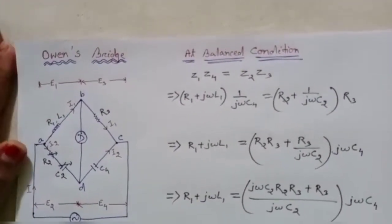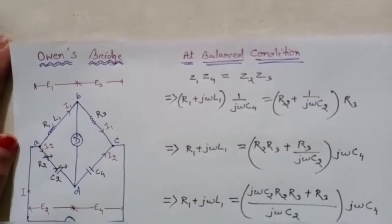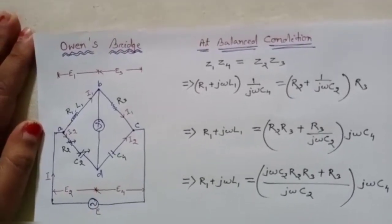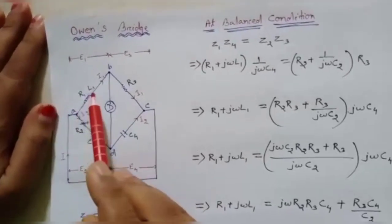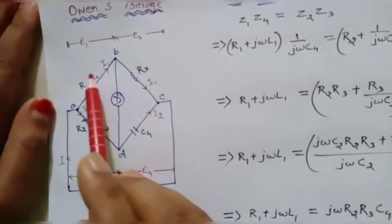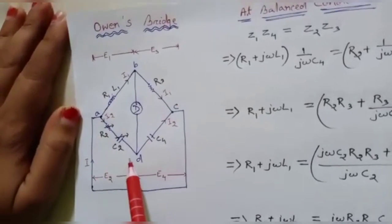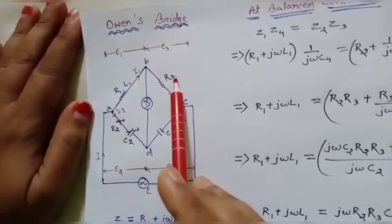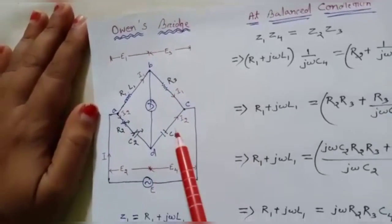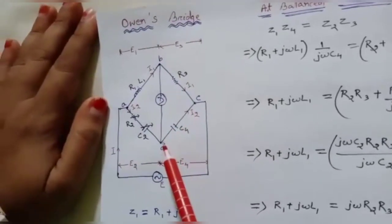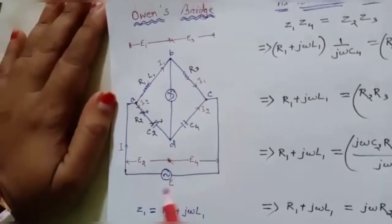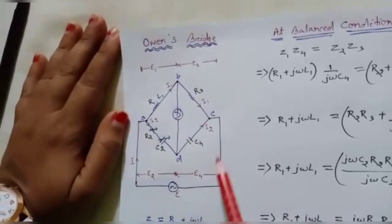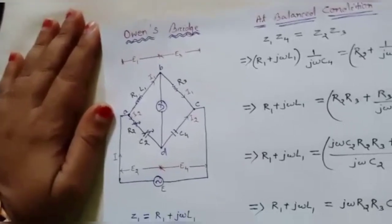Hello everyone. In this lesson we will study about Wein's Bridge. This bridge is also used for measurement of unknown inductance. Here is the bridge circuit — branch 1 has the unknown R1 and L1 that we need to find out. Branch 2 has a variable resistor and variable capacitor. Branch 3 is a simple resistive branch, and branch 4 is a purely capacitive branch. The detector is connected between points B and D, and the source is also shown.